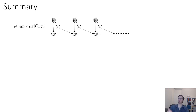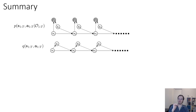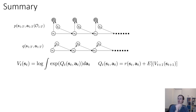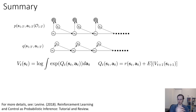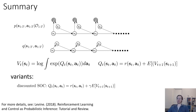To summarize: we have our original model, made a variational approximation, value functions at every step are the log integral of the exponentiated Q values, and Q values are backed up normally like in the regular Bellman backup. You can read more in the 2018 tutorial article 'Reinforcement Learning and Control as Probabilistic Inference: Tutorial and Review.' This basically gives us a dynamic programming algorithm that is a soft analog to value iteration. Variants include a discounted version with gamma in front of the next value function, and an explicit temperature parameter alpha.